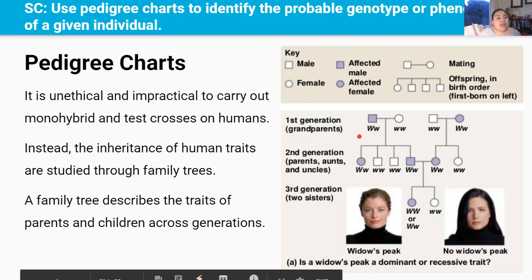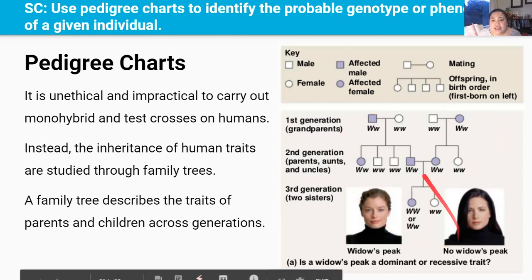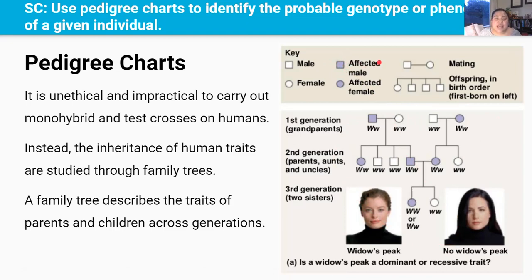When reading a pedigree chart, it's important to know the conventions. A square indicates a male individual, and a circle indicates a female individual. Shaded individuals are affected — sometimes this could be a disease, but in this case it's the dominant trait, widow's peak. A horizontal line between two individuals represents a mating event. So this male mated with this female, and the line going down and horizontal shows their offspring — this couple has produced four offspring. The fourth offspring has mated with another individual, and together they have produced two offspring.